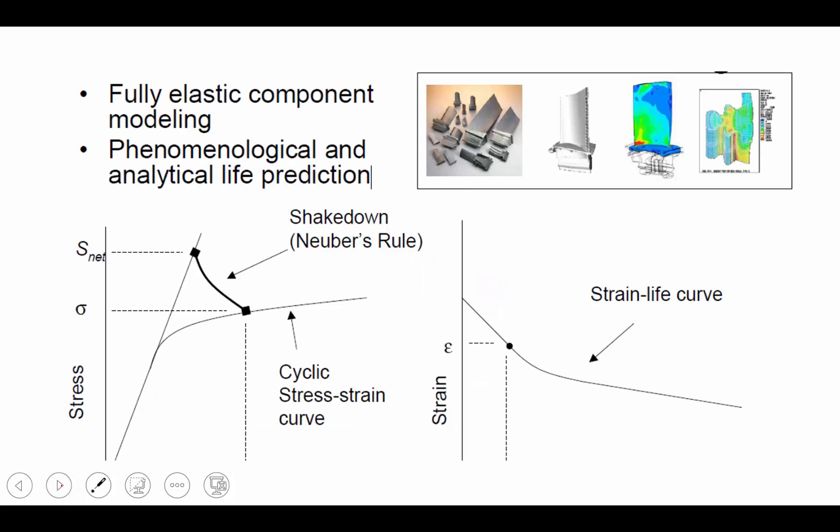How would this really work? The idea would be for us to create a fully elastic model of our components—say it's a turbine blade—we would then phenomenologically analyze in the vicinity of our holes, and then we would apply some shakedown method where we go from that fully elastic, linear elastic response, and modify it using Neuber's rule to get to our real plastic stress-strain response in the material. And then from there, taking that strain value and applying the strain life approach.